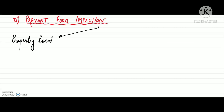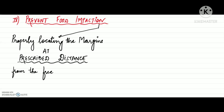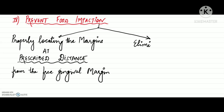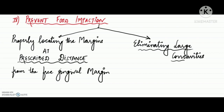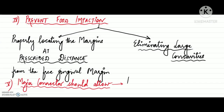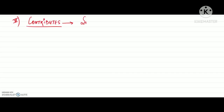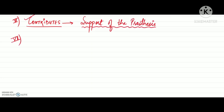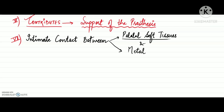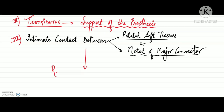Connectors should also prevent food impaction. Food impaction can be minimized by properly locating the margins at the prescribed distance from the free gingival margin and by eliminating large concavities where food can collect. The major connector must also allow appropriate placement of the associated denture base — the type of major connector is generally dictated by the number and location of edentulous areas. Finally, the intimate contact between the palatal soft tissues and the metal of the major connector enhances the retention and stability of the denture, contributing to its support.